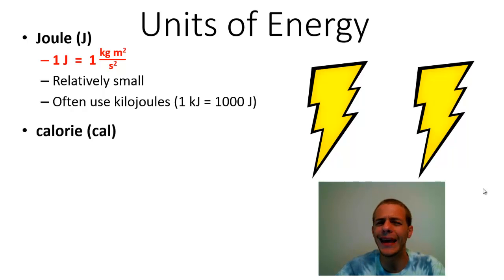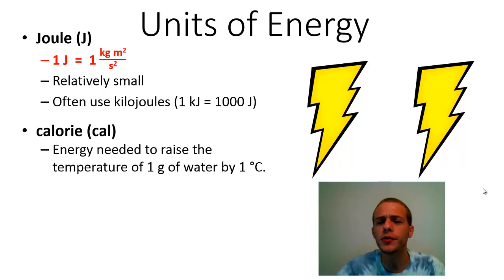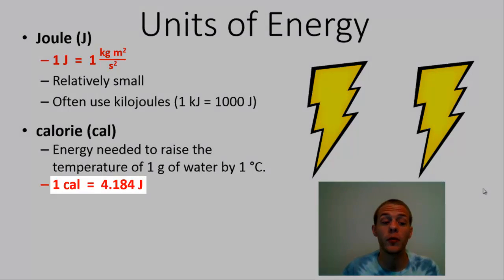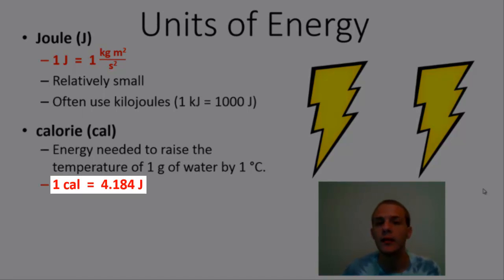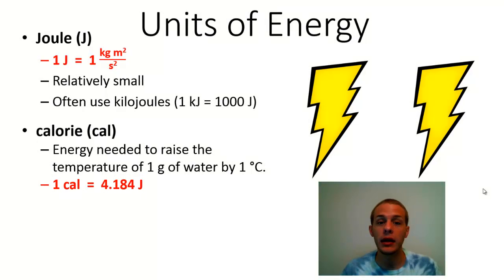Now another common unit of energy is the calorie which I'm sure you are familiar with. And that has the symbol lowercase cal. And the definition of the calorie is the amount of energy that's required to raise the temperature of one gram of water by one degree Celsius. And if you wanted to convert between calories and Joules, you could use this relationship over here. Where we have one calorie is equal to 4.184 Joules. So we can see in this relationship that the calorie is a larger unit of energy than the Joule. Because there's more than one Joule in one calorie.